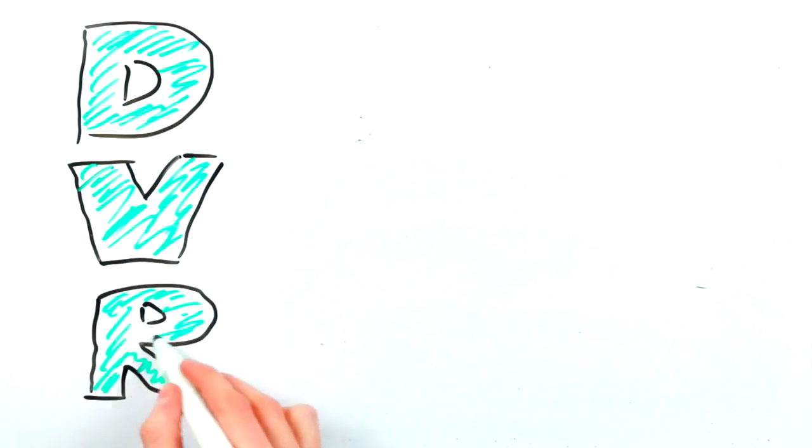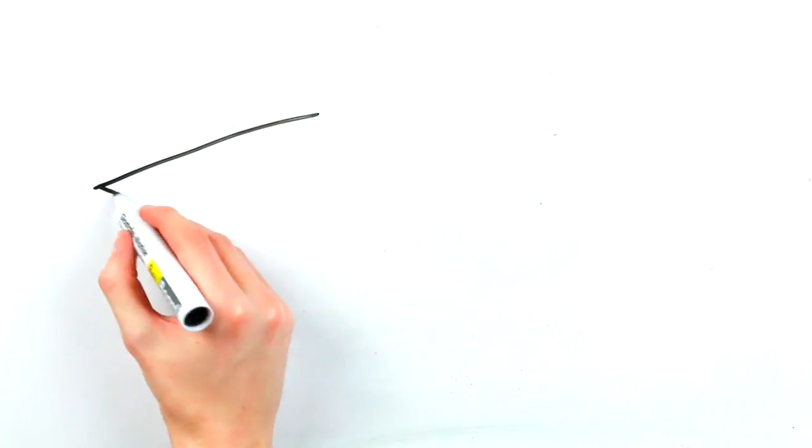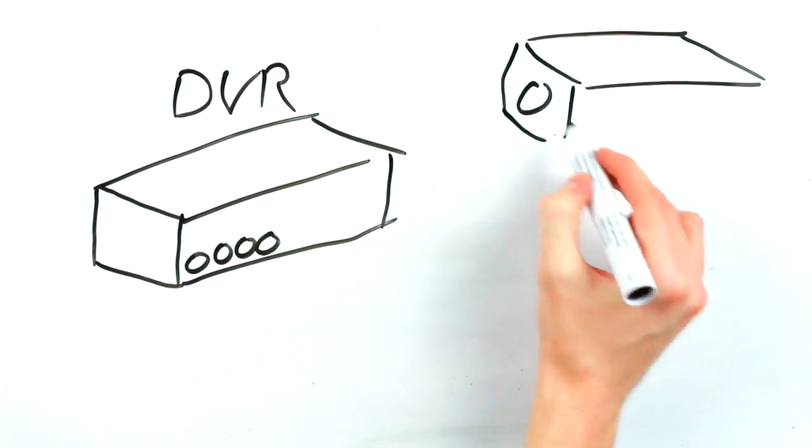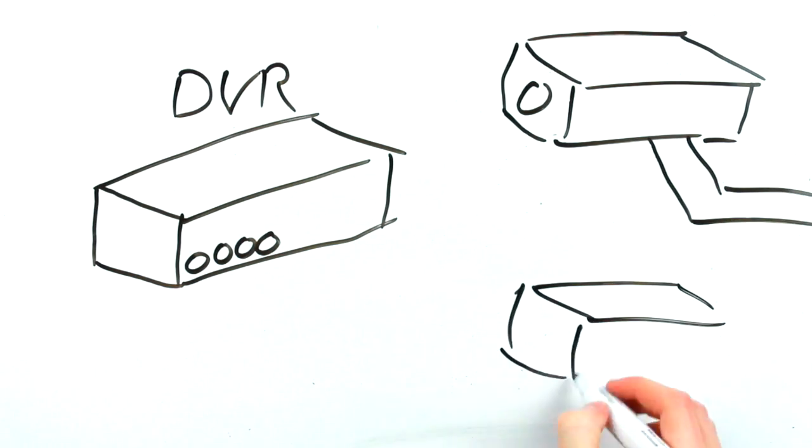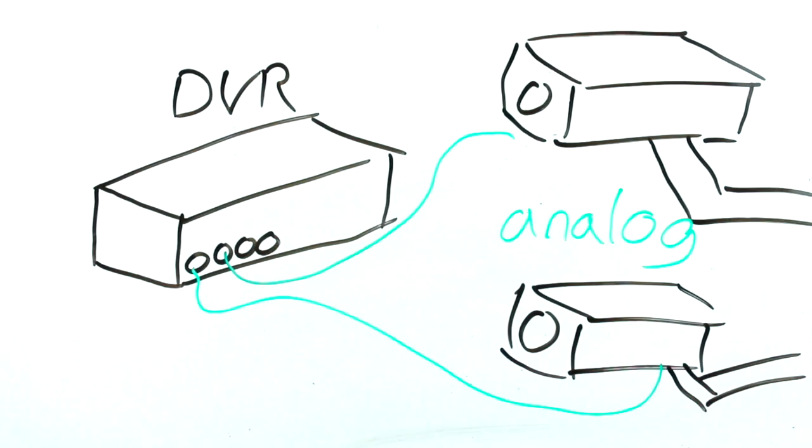DVR. DVR stands for Digital Video Recorder. It basically performs the same function as an NVR, which is to record footage from your cameras. But the difference is that a DVR only records footage from analog cameras and not network IP cameras like the NVR.